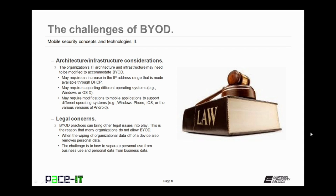BYOD policies also bring in some architecture or infrastructure considerations. The organization's IT architecture and infrastructure may need to be modified to accommodate BYOD. It may require an increase in the IP address range made available through DHCP to allow for the growth in mobile devices. It may require supporting different operating systems, such as Windows, OS X, or Windows RT. It may also require modification to mobile applications to support different operating systems, including Windows Phone, iOS, and various versions of Android.